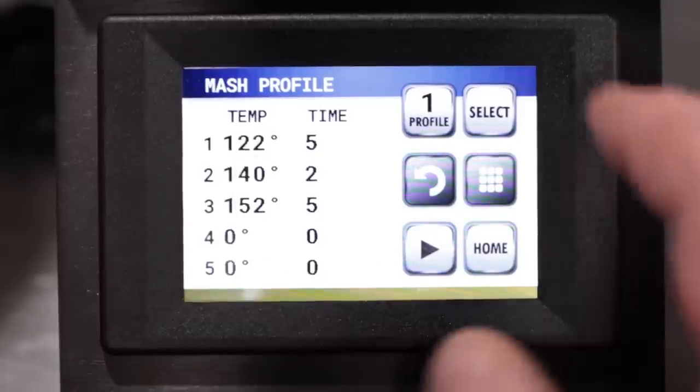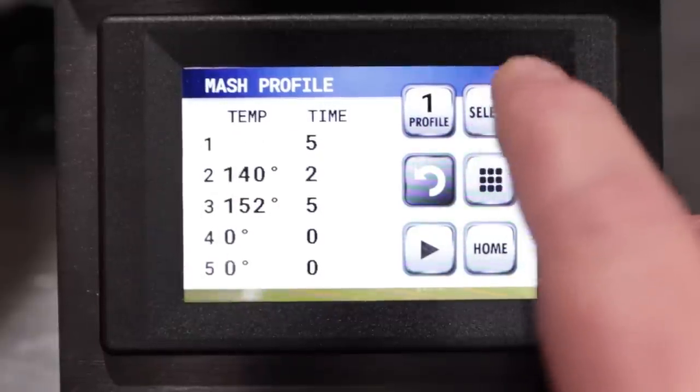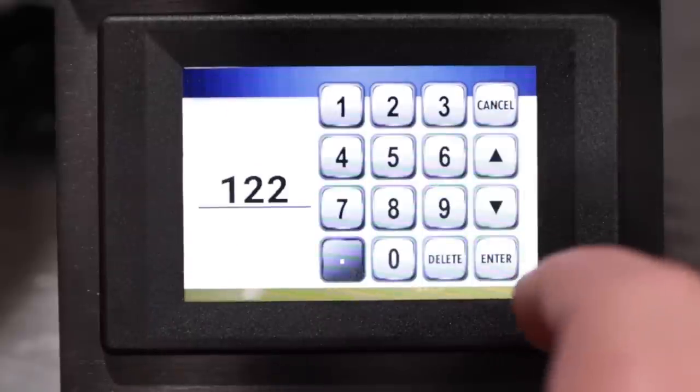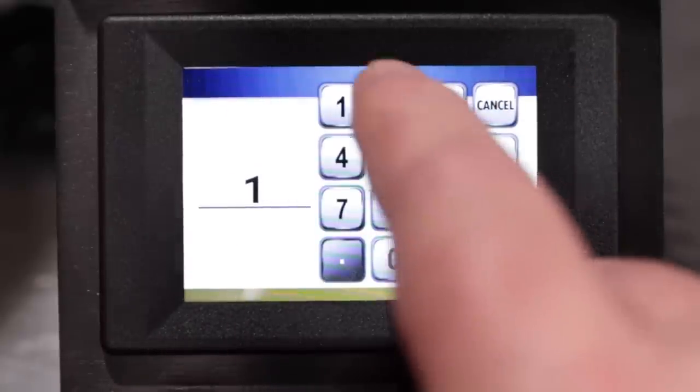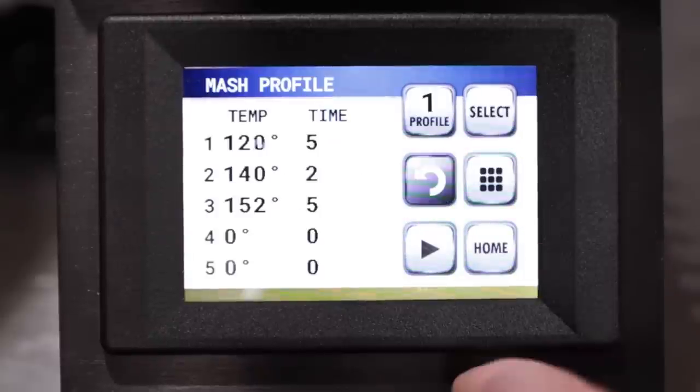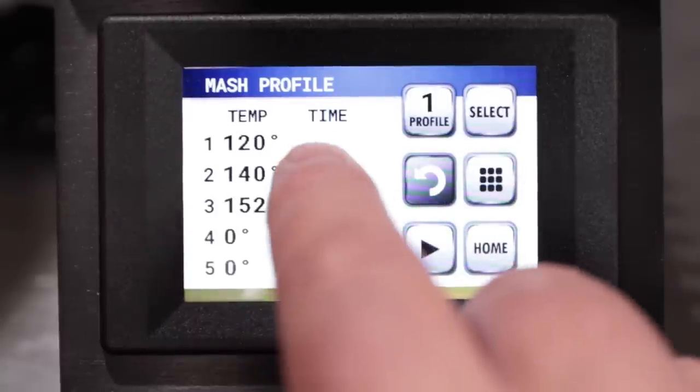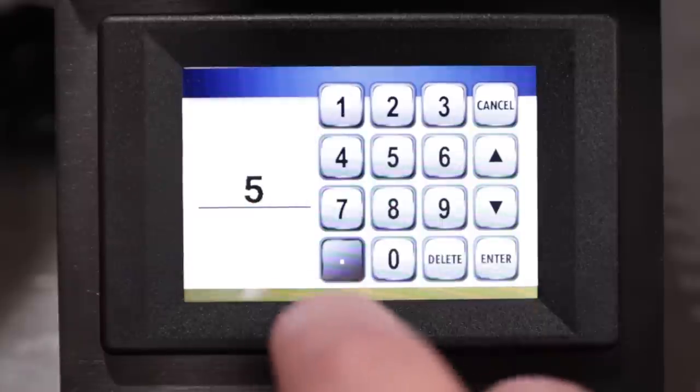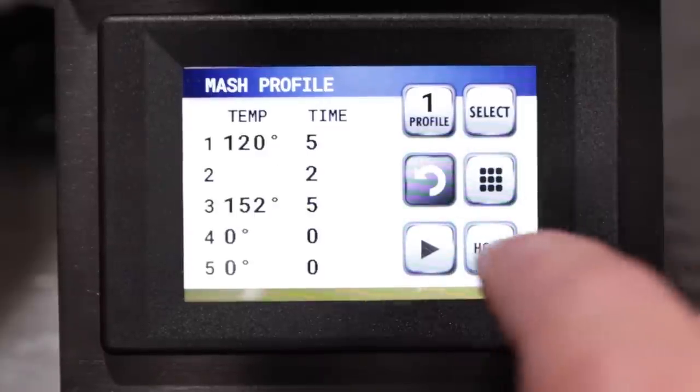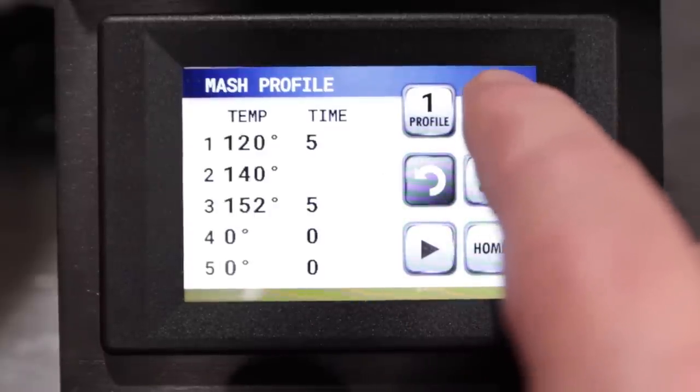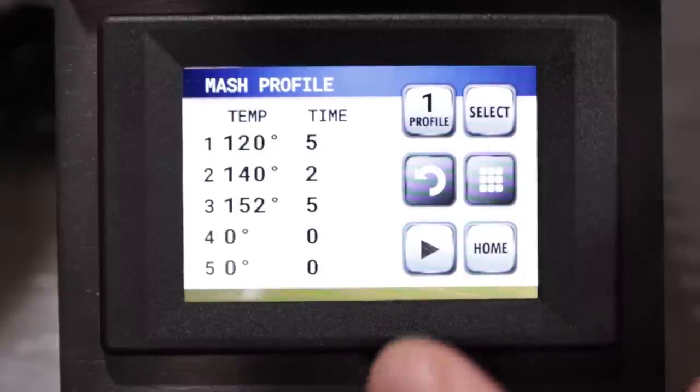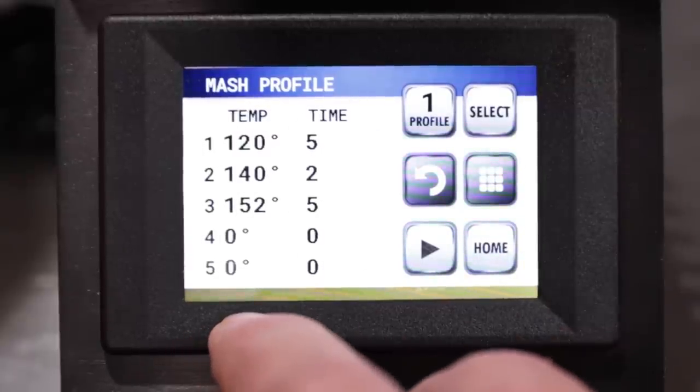In the mash section, you can have up to nine different profiles of mashes that you use. In this one I just made up a dummy profile, maybe for like a wheat beer. How you adjust all of these settings is you hit select and it will allow you to adjust the temperature. So I can adjust this from 122 to 120 and then hit enter. Then it gives you the time and you can enter the time. You continue through each one of those options and it sets back to the profile.